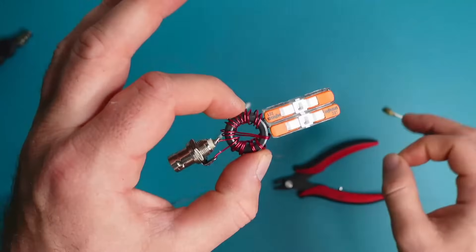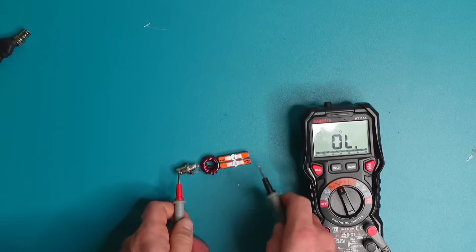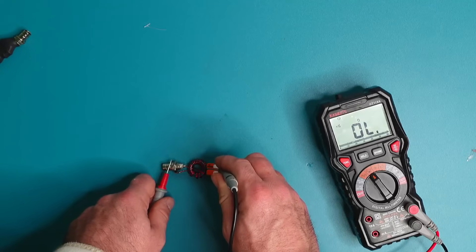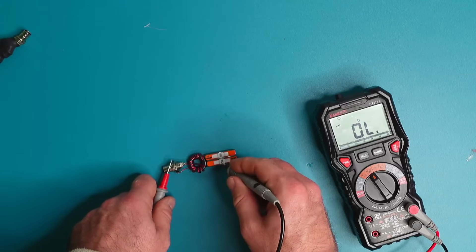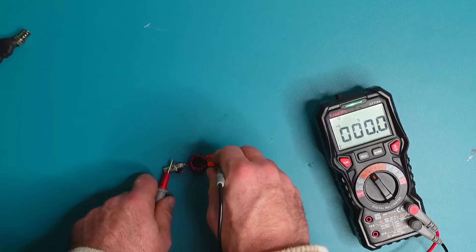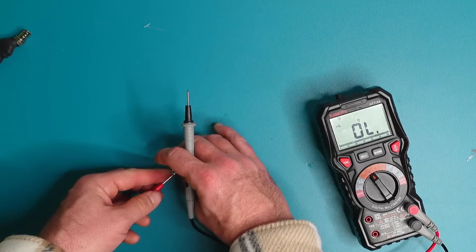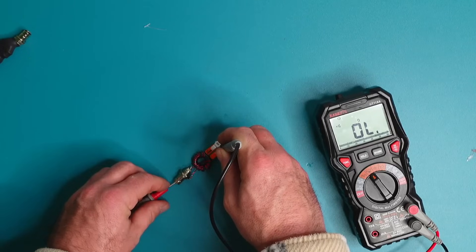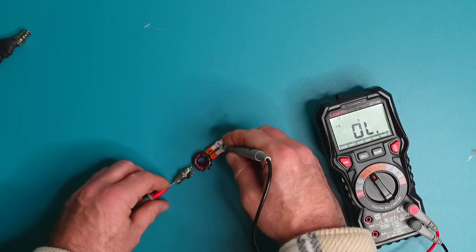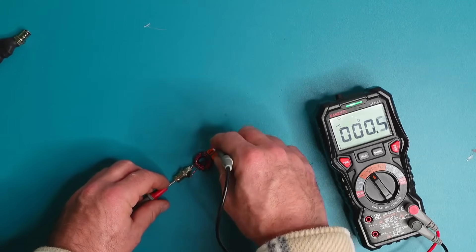But we want to make sure there's continuity. The outer shield. No beep. The outer shield. Good to go. Now we're going to do the center conductor. No continuity. That's good. Good to go.